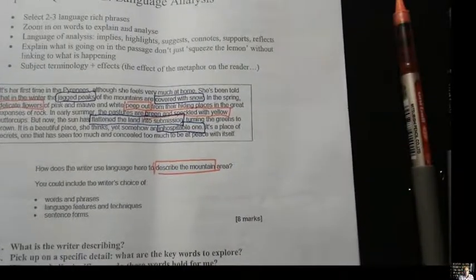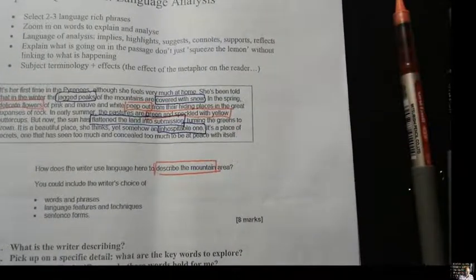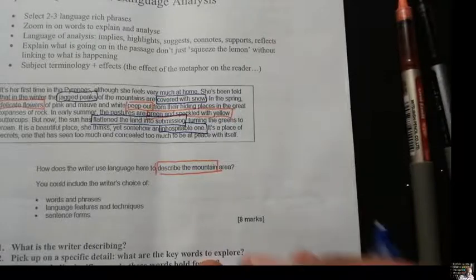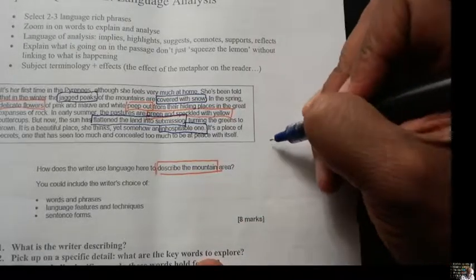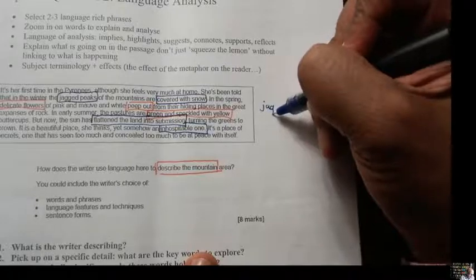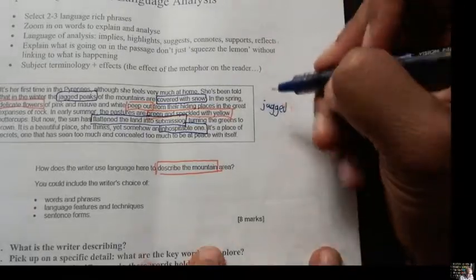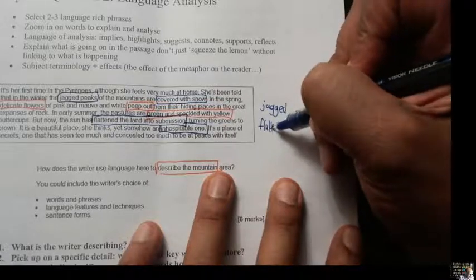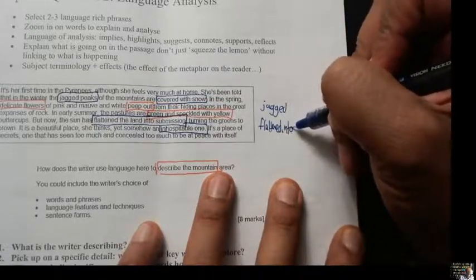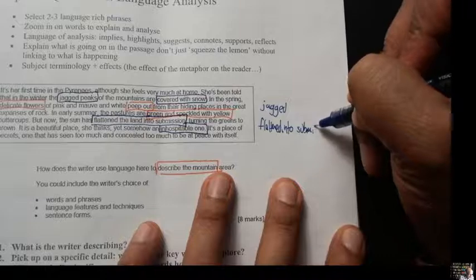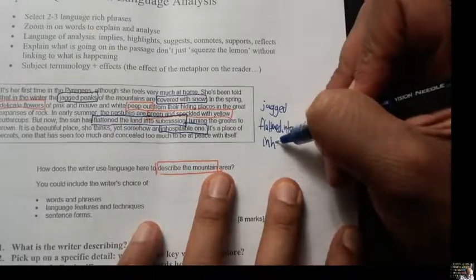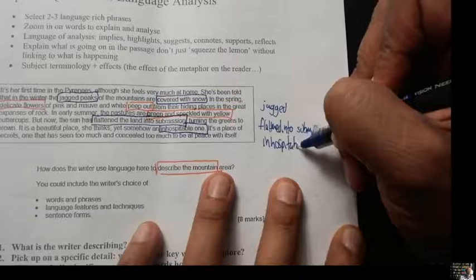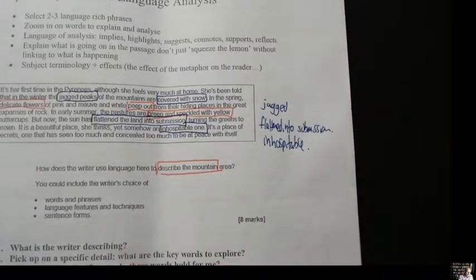Okay, so what we have here is language that describes the mountains. Let's see. We have jagged. We have flattened into submission. Inhospitable.